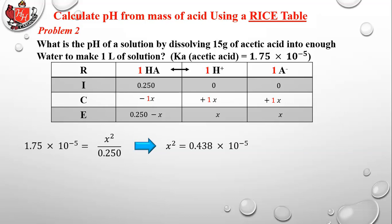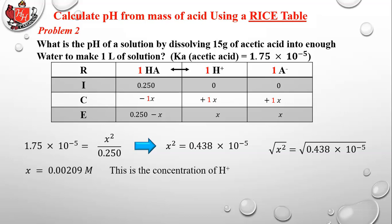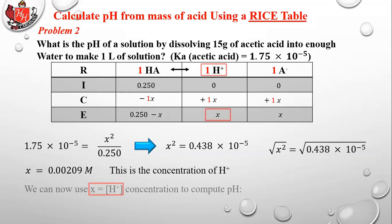Multiply 0.25 × 1.75 × 10⁻⁵ to get 0.438 × 10⁻⁵, then take the square root to get x = 0.00209 M. Since x equals the hydronium ion concentration at equilibrium, pH = −log(0.00209) = 2.68 — the same answer as before. Both methods give the same result; practice both so you're comfortable with each.